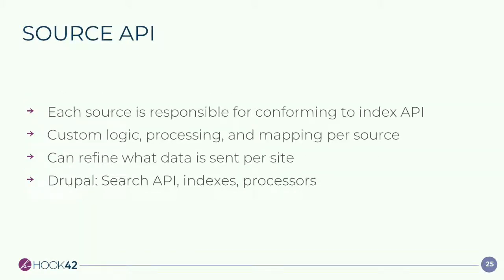With the source API approach, every source is responsible for performing its own transaction and it has to conform to what the central index is doing — the data types and fields. This often ends up being that you have to have custom logic per site, write all the processing, and perform the mapping from elements on your page to what is in the index itself. It's like what the migrate tool is doing. But the benefit is you can really refine or very uniquely specify what you want to send per site, which is advantageous in some cases.